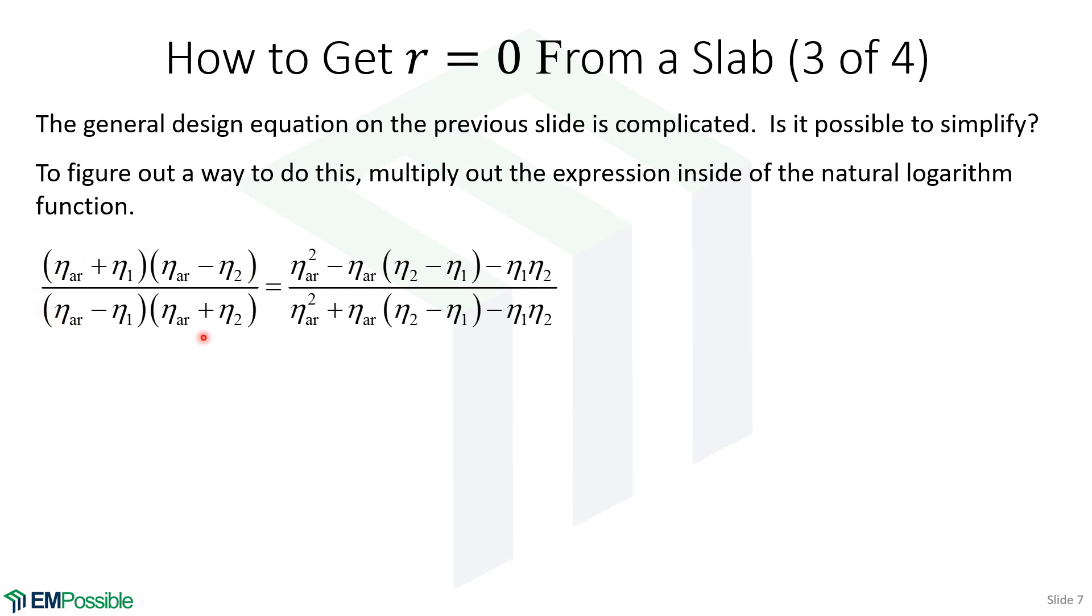So let's simplify this a bit, but it's not entirely clear how we simplify it. Well, here's this function of all the different impedances we had inside the argument of the natural log. So I've multiplied this out and staring at this long enough, we can figure out how to simplify this or at least a condition. We see we have this NAR times N2 minus or eta 2 minus eta 1. And that term appears in the denominator and numerator. We also have an NAR squared minus eta 1 times eta 2. What if we chose the impedance of the anti-reflection layer squared to be this eta 1 times eta 2?